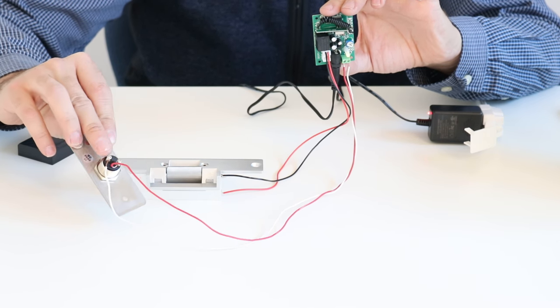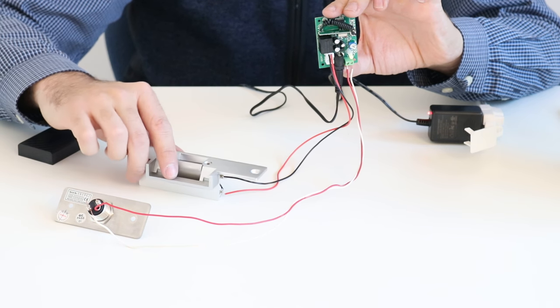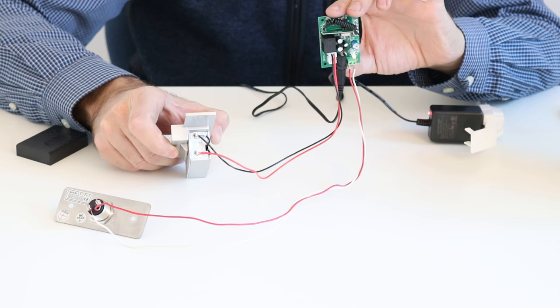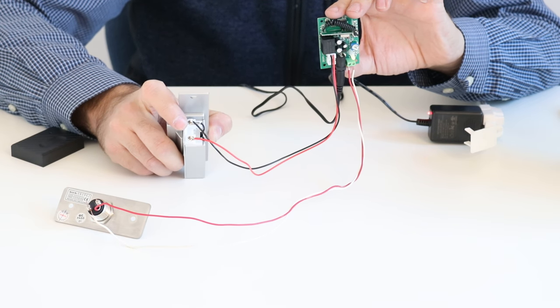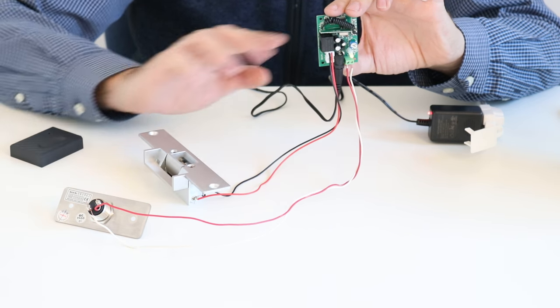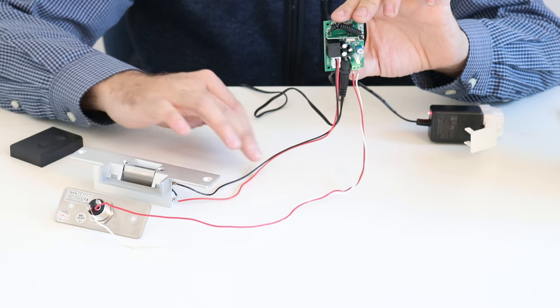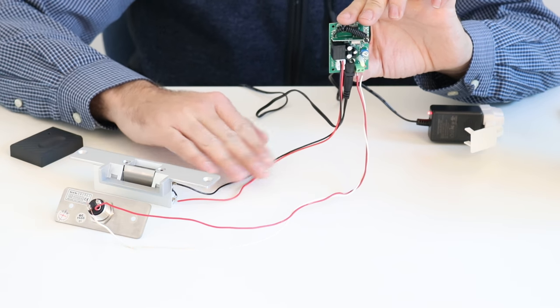For the electric strike, we've just got the two wires right here on the top of the electric strike that wire into the control board. So very simple wiring—you're looking at two wires here to the electric strike.